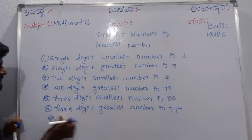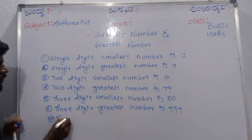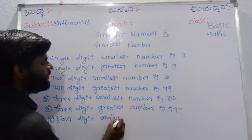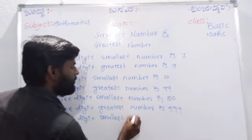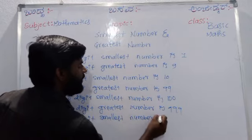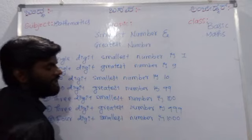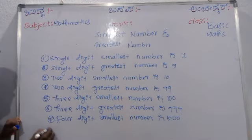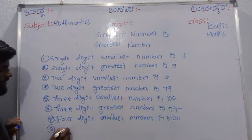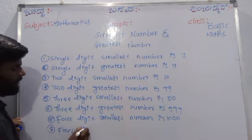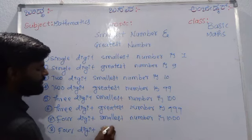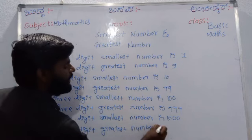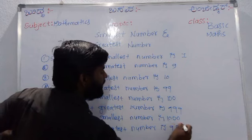Next, four digit smallest number is 1000 — how many digits are here? One, two, three, four. Four digit smallest number is 1000. Eighth one, four digit greatest number is 9999.